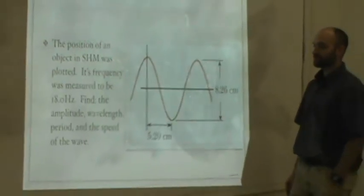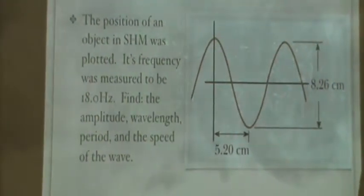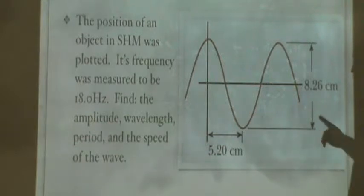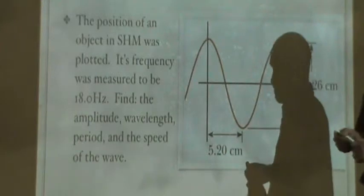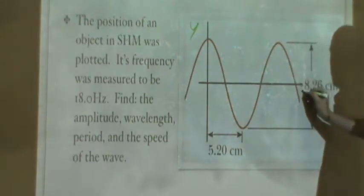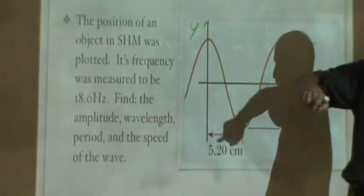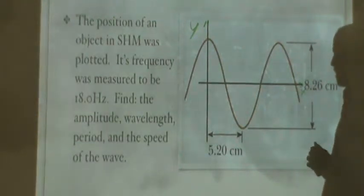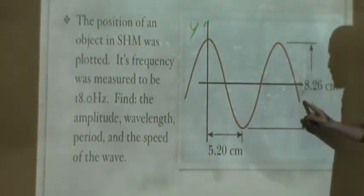Let's do an example. So the position of an object in simple harmonic motion is plotted. So this could be a wave going down a spring. Now notice the axes here. The axes on this are not position and time. This is Y position and this is X position. So the vertical axis is measuring how high up the wave is, and this is measuring how far over the wave is. So this graph is a little bit different than the ones we've been looking at.